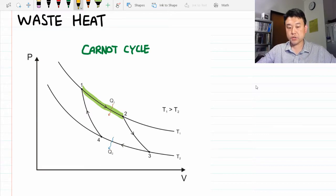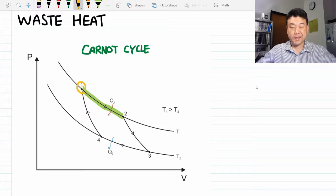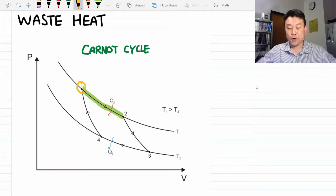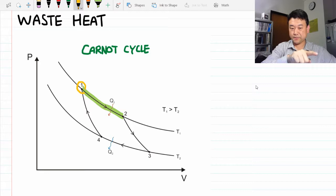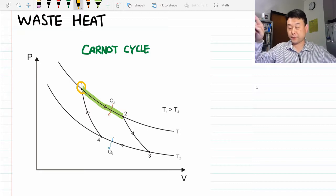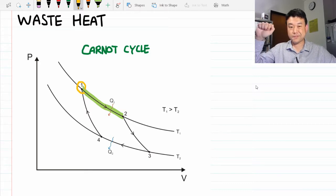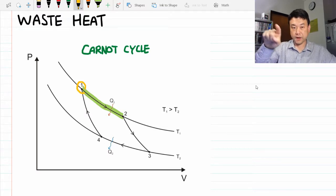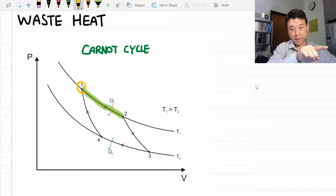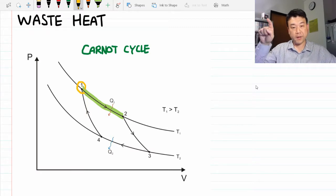So the challenge is to bring the engine back to 1 where it is ready to do work again and do net work over one cycle. If you simply bring the engine back to 1 through the curve 1, 2, then it does no net work.